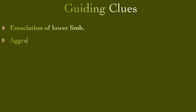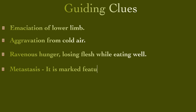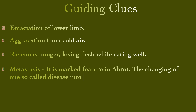Guiding clues are: emaciation of lower limbs, aggravation from cold air, ravenous hunger, losing flesh while eating well, and metastasis — a marked feature in Abrotanum. The changing of one so-called disease into another always calls attention to Abrotanum.